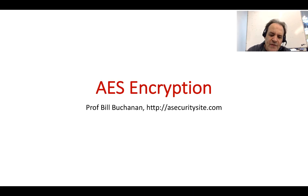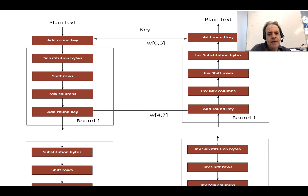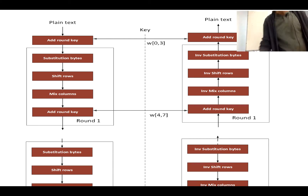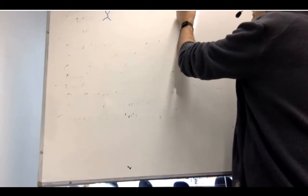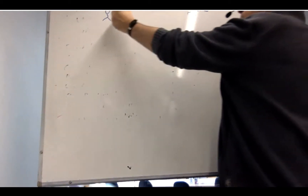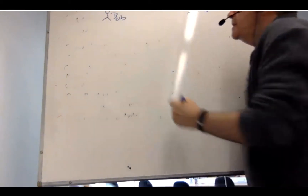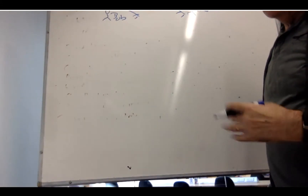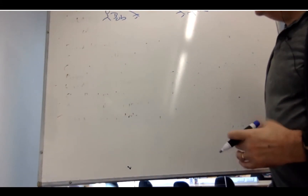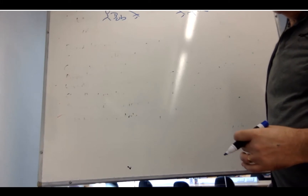I'm going to explain the main processes that we go through with AES encryption. AES encryption involves a number of rounds. What we have is a symmetric key encryption method. So we have Bob and we have Alice, and what we have is a symmetric key — a secret key that they'll both use to be able to encrypt the data.